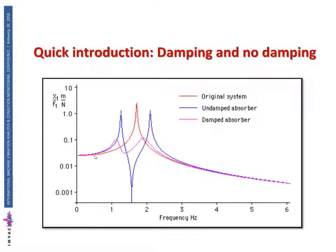Here is a close-up of the response region. There's the original natural frequency that could be excited. If we simply add the mass and spring with no additional damping, we get two natural frequencies on either side of the frequency we were originally concerned about. If we add some damping, we get a better response. If we're operating the machine at exactly the tuned speed, we don't need damping because we get a very low response, but if there's any speed variation then we add some damping as well.